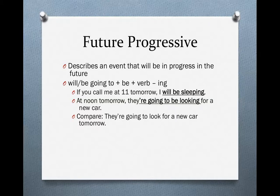Now, compare the second sentence with the third sentence. They're going to look for a new car tomorrow. In the third sentence, we use the simple future. In the second sentence, we use the Future Progressive. Why? Notice the difference in time between the two sentences. In the second sentence, we have a very specific time: at noon tomorrow. In the third sentence, we have a pretty general time: tomorrow. No specific time — we don't know when tomorrow, we just know tomorrow.